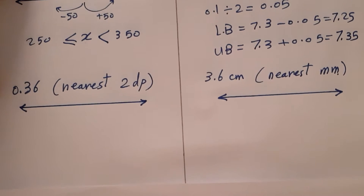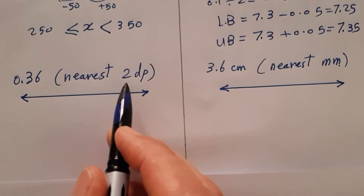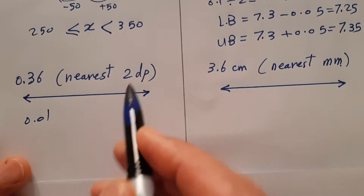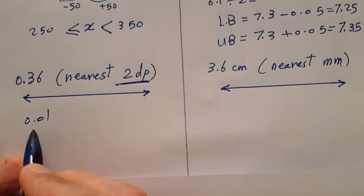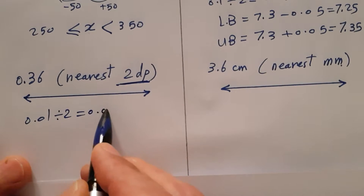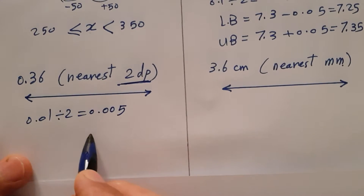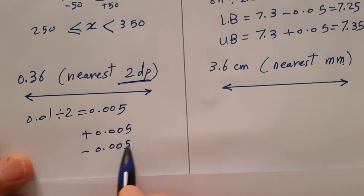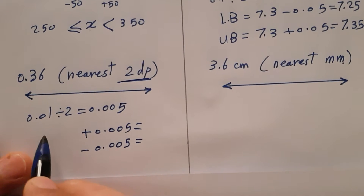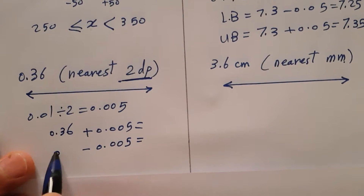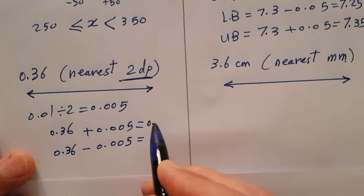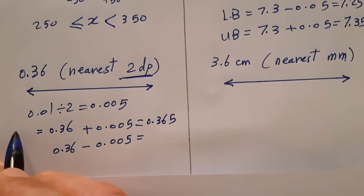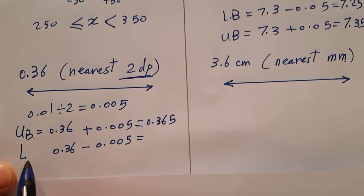The last example: 0.36 to the nearest two decimal places. Two decimal places means the unit is 0.01. Divide 0.01 by 2 gives 0.005. So add 0.005 to get the upper bound and subtract it for the lower bound. Upper bound is 0.365, lower bound is 0.355.